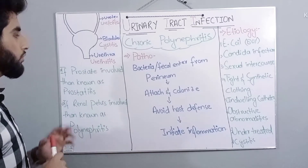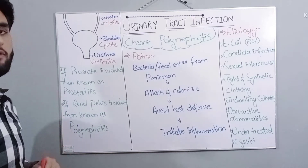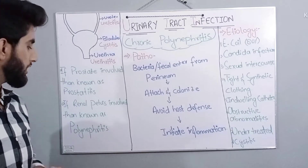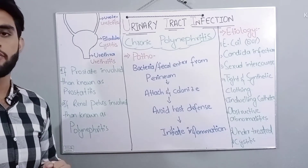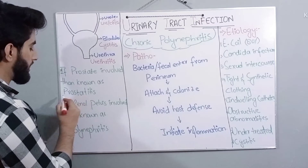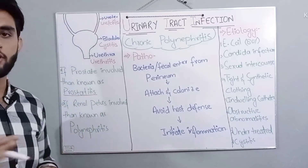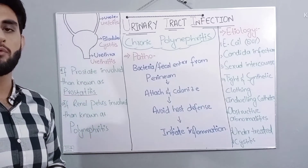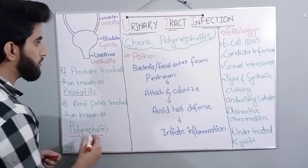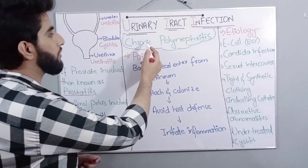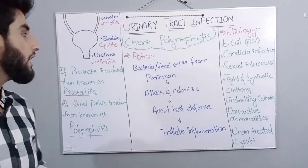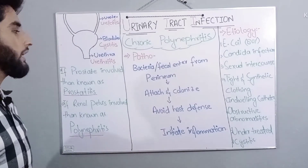Males also have a prostate, so if the infection belongs to the prostate it is known as prostatitis. If the infection belongs to the renal pelvis, it is known as pyelonephritis, which is also called chronic pyelonephritis and is considered the second major form of UTI.